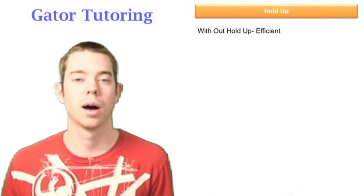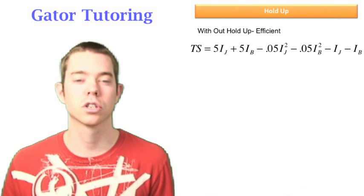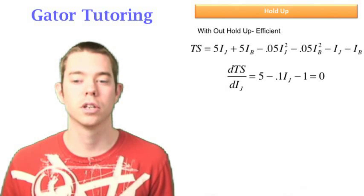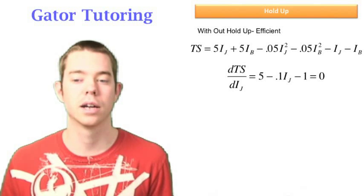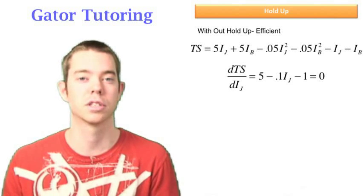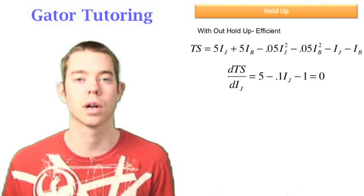But without the holdup problem, this is the efficient amount, we're just going to take the derivative with respect to total surplus. So we can do it with respect to either variable, I've chosen ij, but you know that it's going to be the same thing anyway, it's going to be symmetric again, so ij is going to be equal to ib.